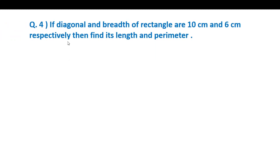Question 4: If diagonal and breadth of rectangle are 10 cm and 6 cm respectively, then find its length and perimeter. We have to find length and perimeter. What is given? Diagonal is 10 cm and breadth is 6 cm. Let's draw the diagram. Look at the figure - rectangle. Here, diagonal AC is given as 10 cm and breadth is 6 cm. We have to find the length and perimeter.